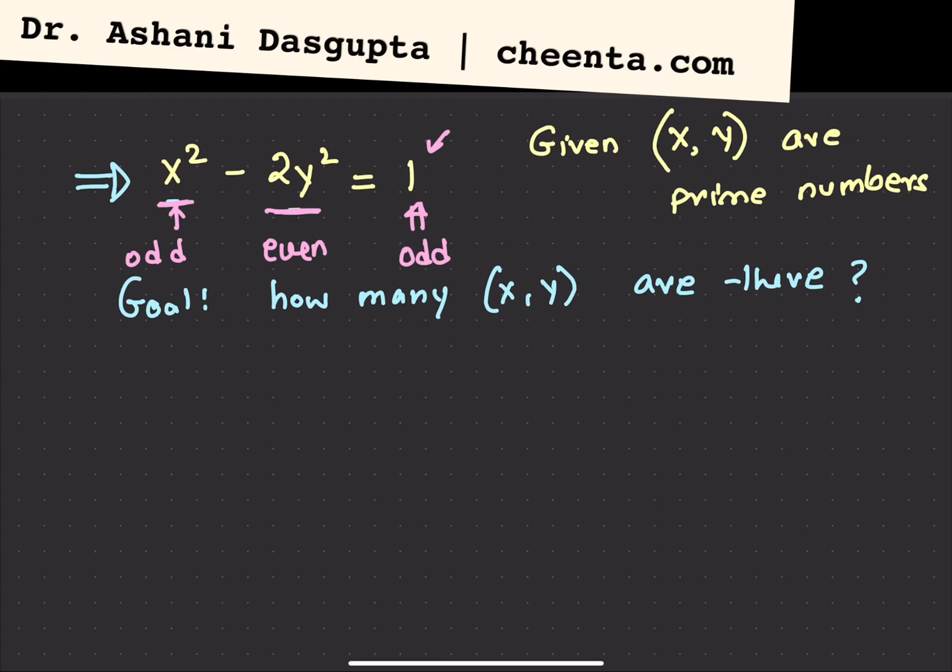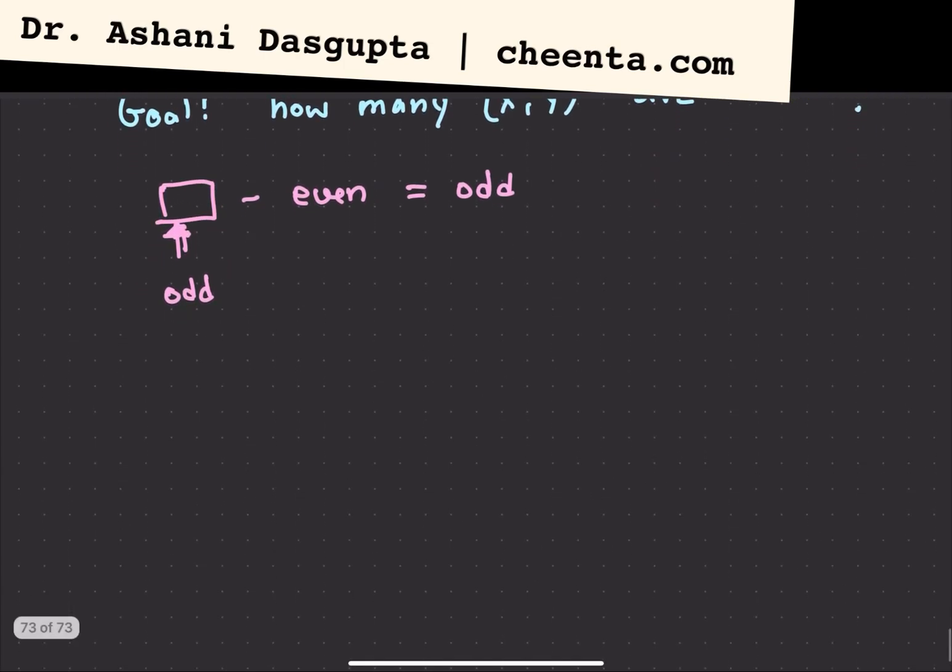Because if something minus even is equal to odd, that means this quantity right here must be odd itself. If you subtract even from even, then you get an even number. So this number right here must be odd number, which means x square is odd. So conclusion 1: x is odd prime.